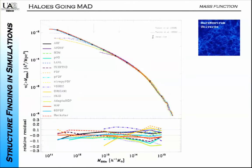We have two plots: the cumulative mass function as a function of mass. When you put them in a log plot using the definition for mass, you might say everything looks healthy—they all agree. But if you look at the residuals, you see a 10% scatter, which is quite significant. Not all participating codes were capable of analyzing the 1024-cube simulation—we had different resolutions: 1024-cube, 512-cube, and 256-cube particles.